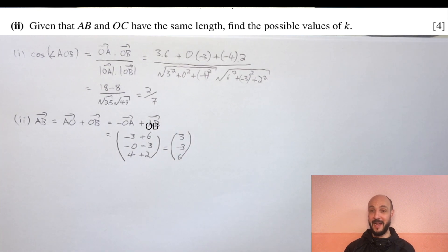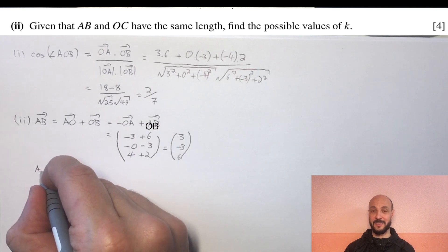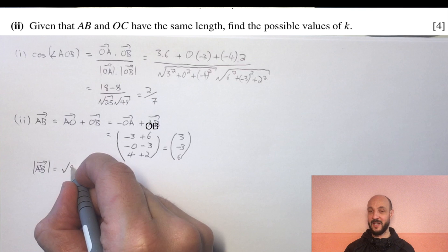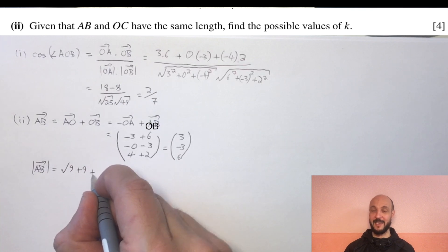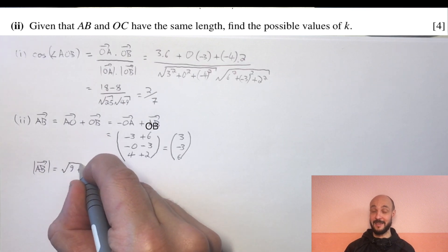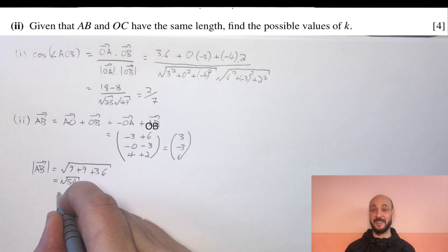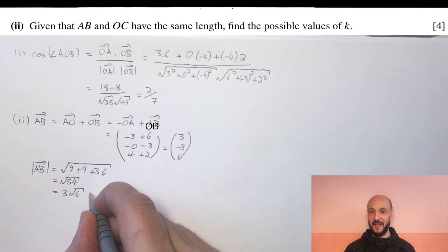So the length of AB, the magnitude of AB using Pythagoras theorem is the square root of 3 squared plus minus 3 squared plus 6 squared which is the square root of 9 plus 9 plus 36 which is the square root of 54. Writing that neater, 54 is 9 times 6 so we can write that as 3 root 6.